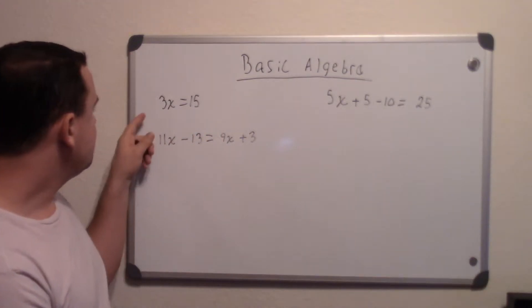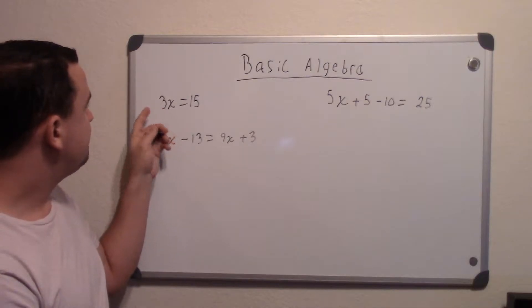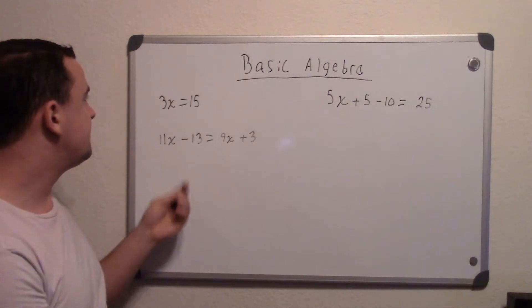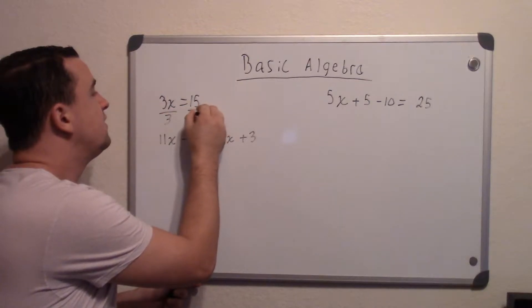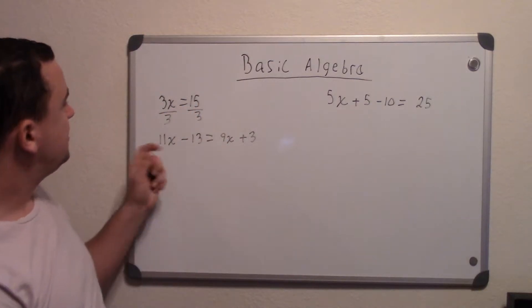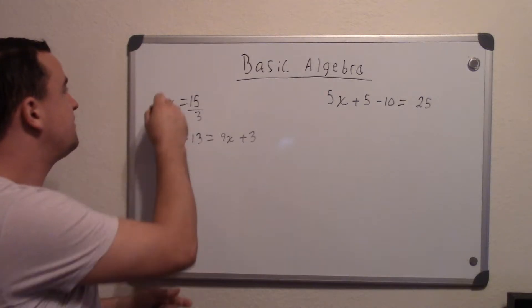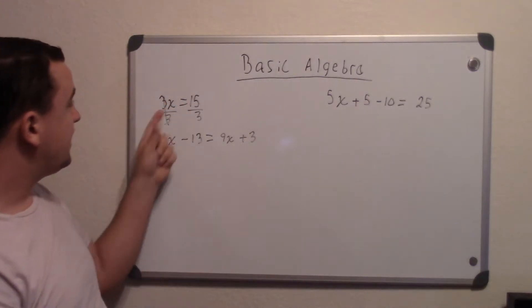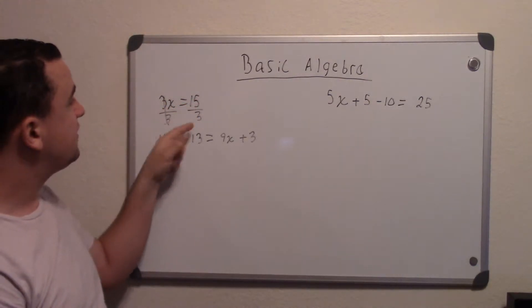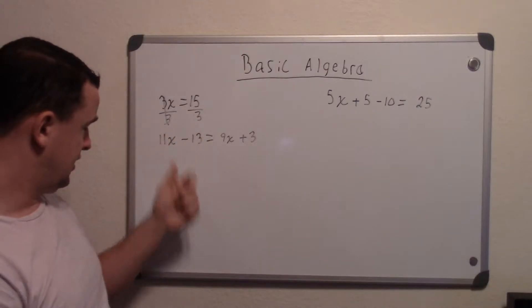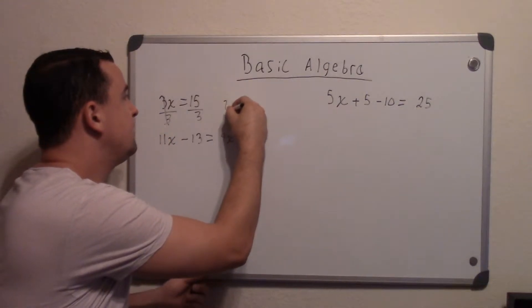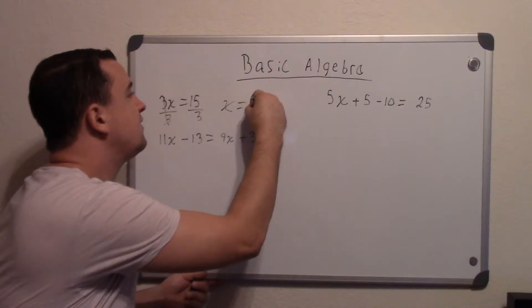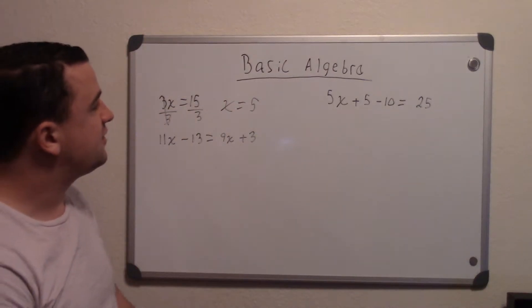So again, this one is being, 3 is being multiplied by x. So we now divide by 3, and we do it to both sides. Now, because we're dividing, obviously the 3 and the 3 cancel out. And that actually leaves you with x. 15 divided by 3 equals 5. So now your whole new equation is x equals 5. And that's it for as one as simple as that.